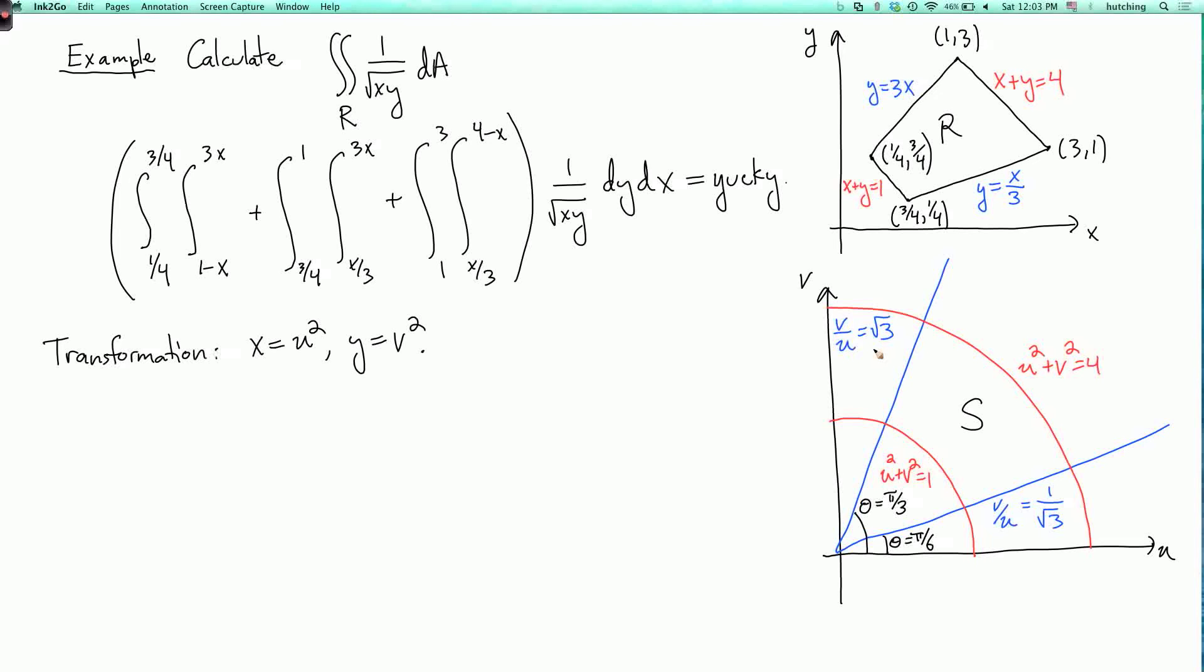Now let's calculate the Jacobian. So d of x, y over u, v is the determinant of dx du, dx dv, dy du, dy dv.